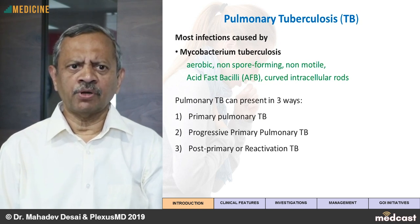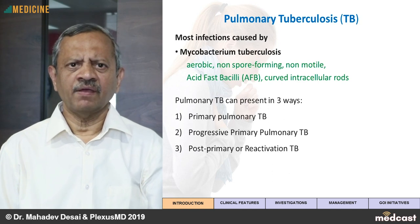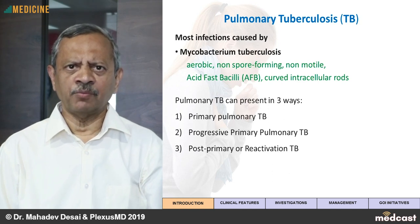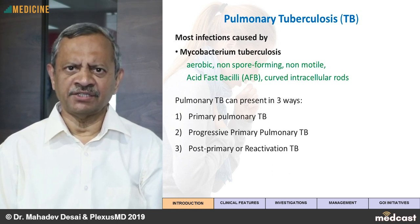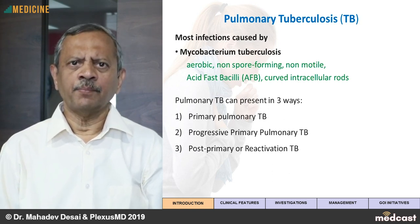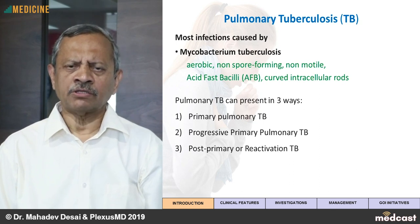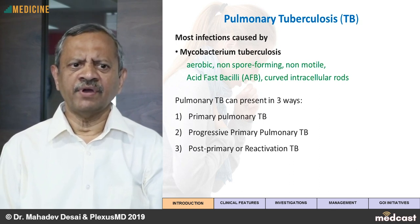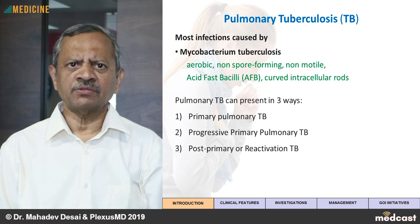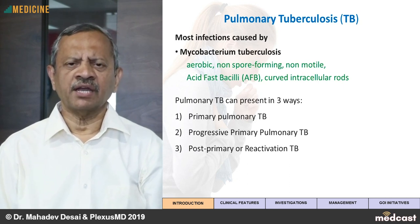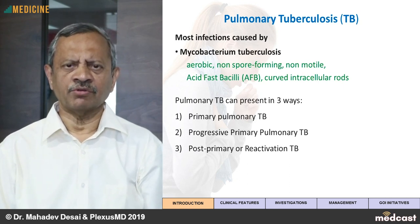Pulmonary Tuberculosis mainly presents in three ways: either Primary Pulmonary Tuberculosis, mainly seen in children; Progressive Primary Pulmonary Tuberculosis, also seen mostly in children; while in adults, what we see is called Post-Primary or Reactivation Tuberculosis.